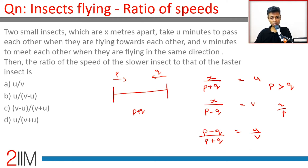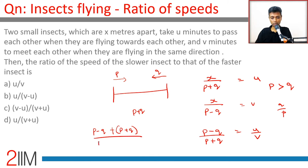We apply componendo-dividendo — divide by p throughout or use the componendo-dividendo rule. Adding numerator and denominator and dividing by their difference: numerator plus denominator by numerator minus denominator gives u plus v by u minus v.